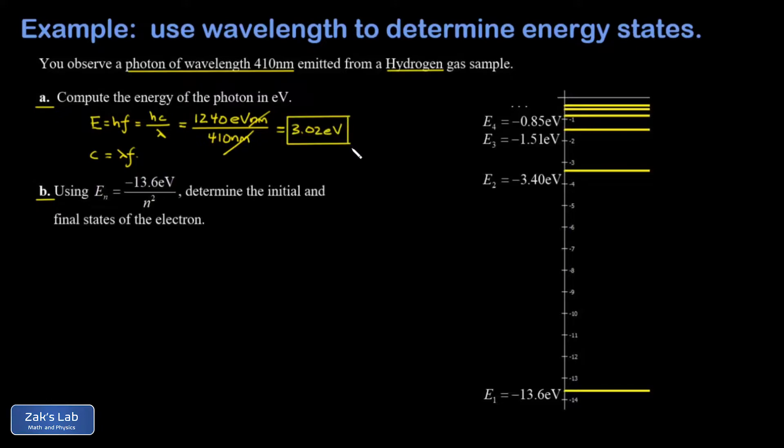All right, so for a photon with 3.02 electron volts to have been emitted from this hydrogen sample, an electron must have dropped by 3.02 electron volts as it transitioned from one energy level to the next. And we have a visualization of the energy levels for the hydrogen atom over on the right. That's given by the formula negative 13.6 eV over n squared, where n is the state number for the electron.